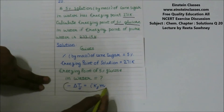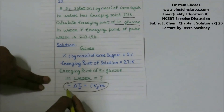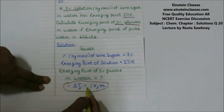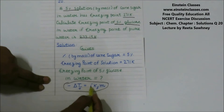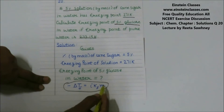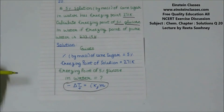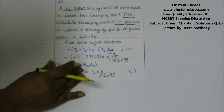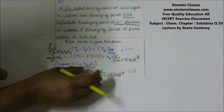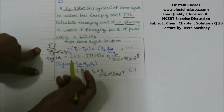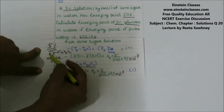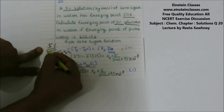The concept we are going to use is depression in freezing point: minus delta Tf equals i·Kf·m, where i is the van't Hoff factor, Kf is the molar depression constant, and m is the molality of the solution. We will apply this for the cane sugar solution.